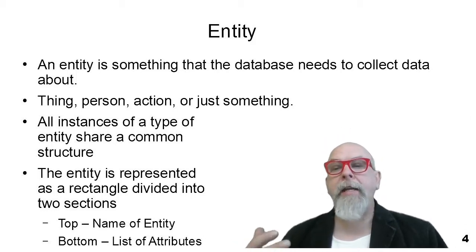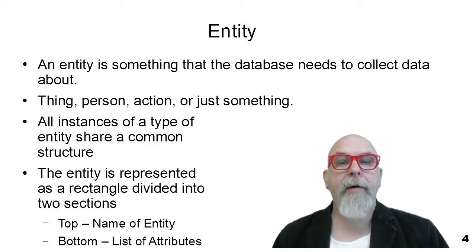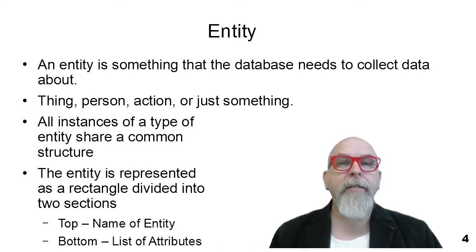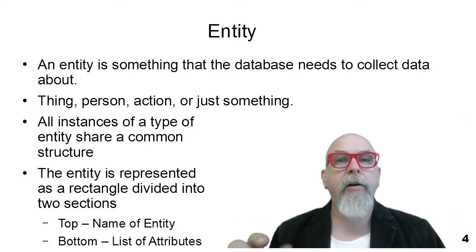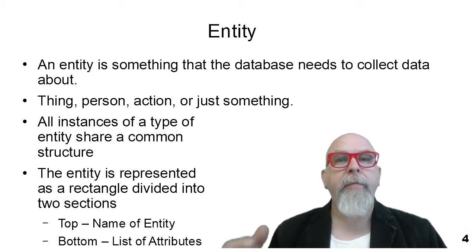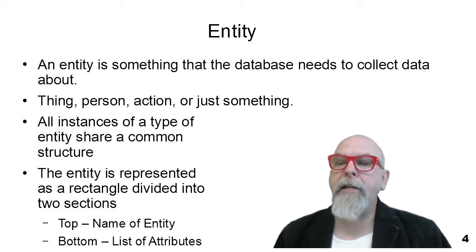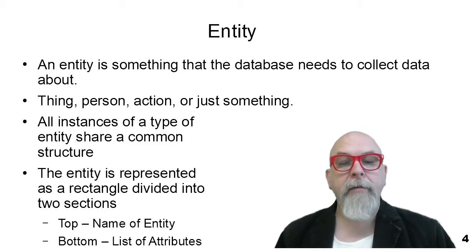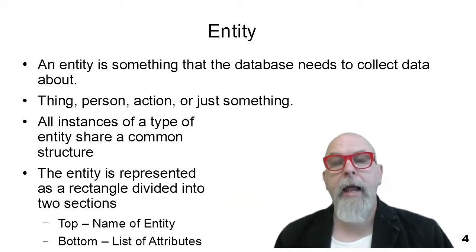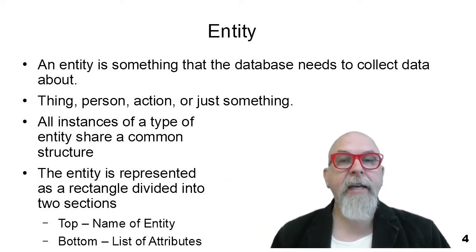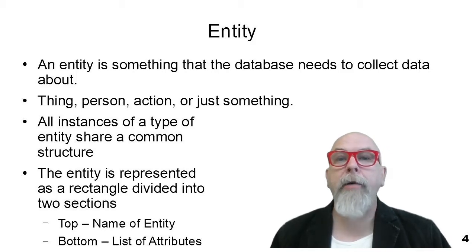An entity is something that we care about. It's something that we collect data about — a thing, a person, an action. All instances of an entity type share common attributes or common structure. For instance, all students follow the student structure, or all inventory items follow a standard structure. In an entity relationship diagram, entities are represented by a rectangle divided into two sections with a horizontal line. Above the line you place the name of the entity, and below the line we place the various attributes within the entity.